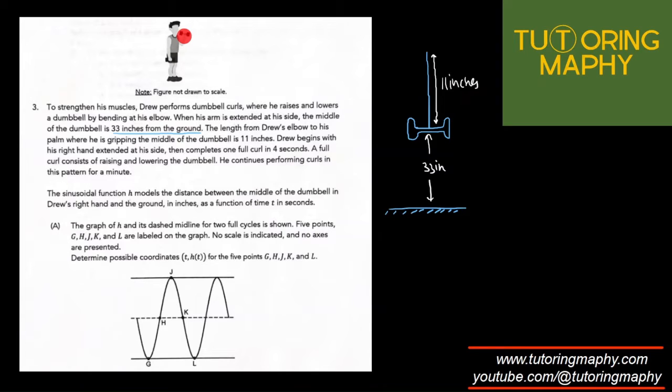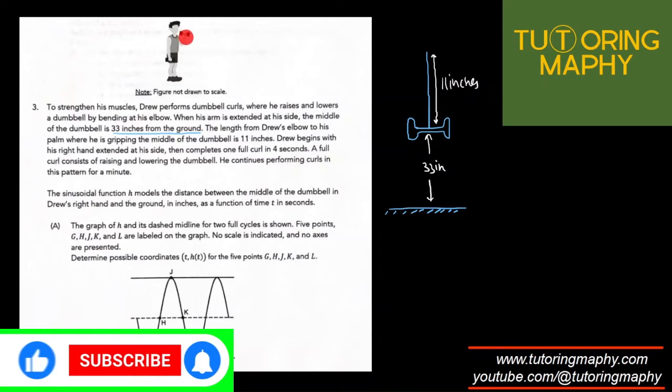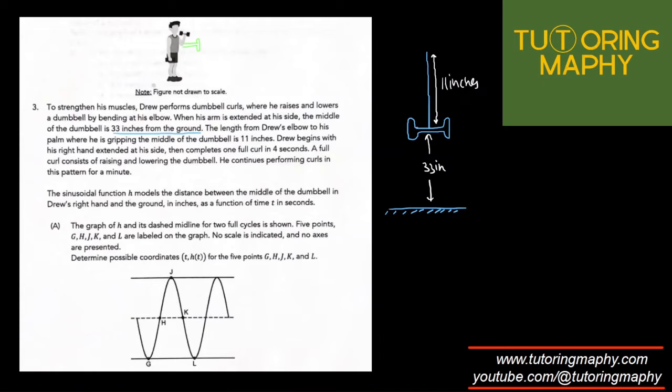This is when he fully raised his dumbbell, then he comes to the relaxed position. There will be a position where the dumbbell is in the middle. He performs this for one minute, taking four seconds per cycle.